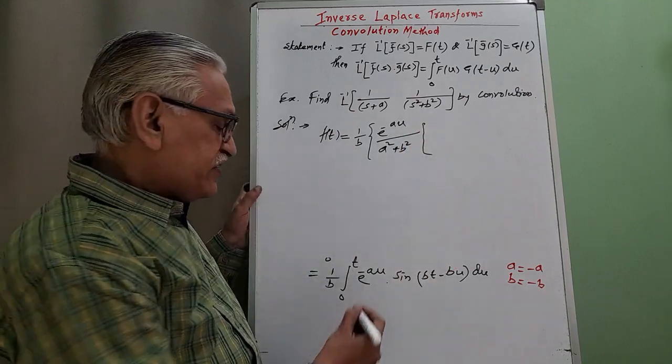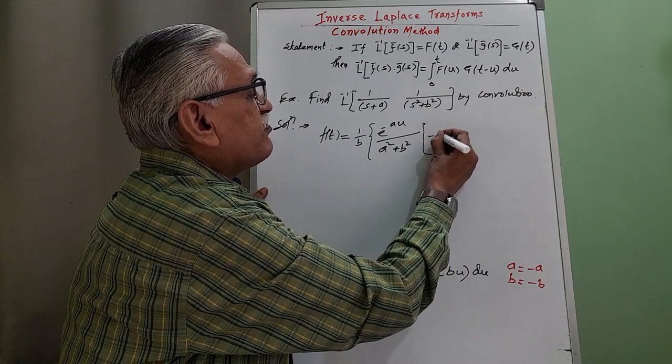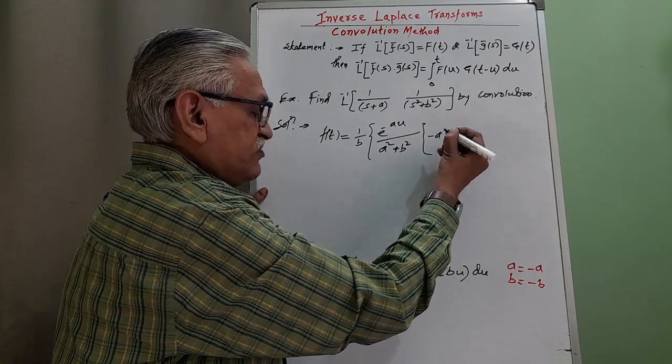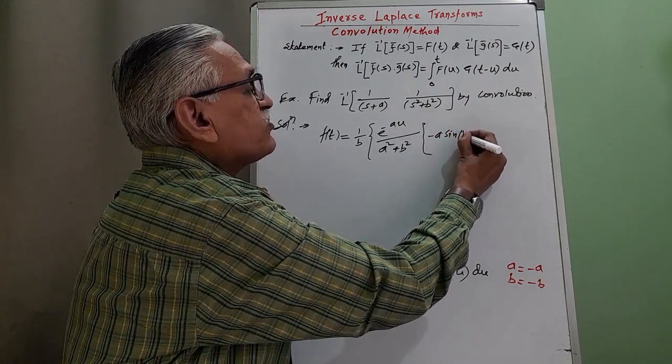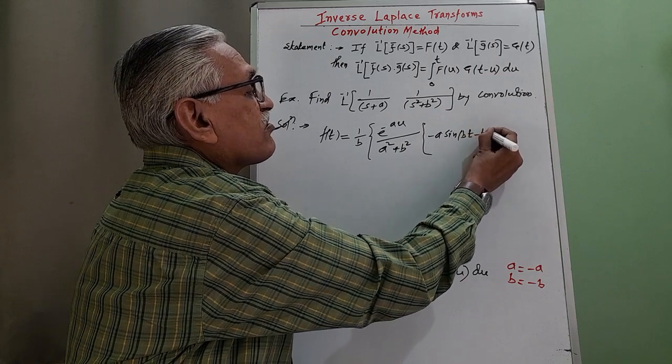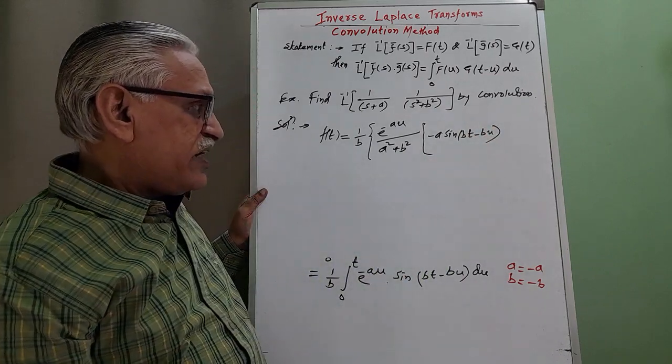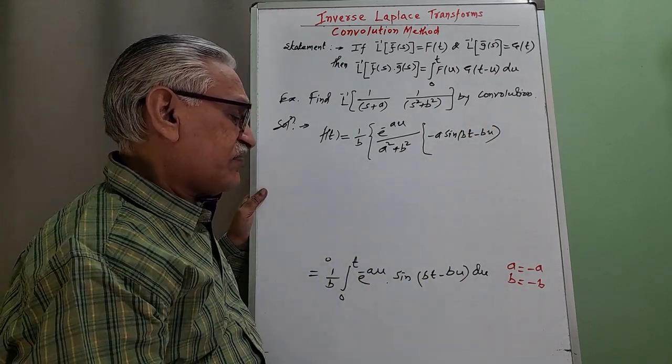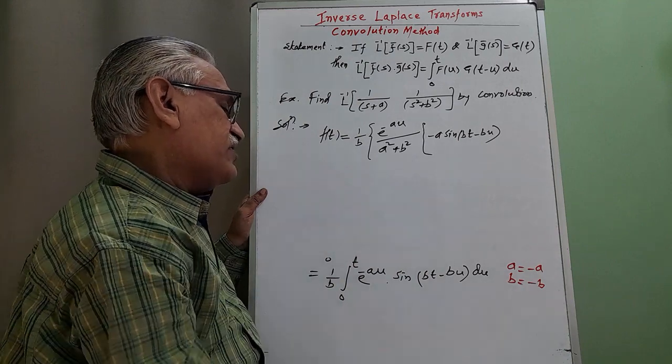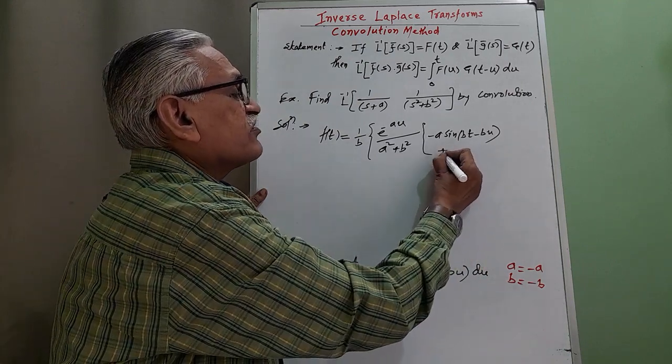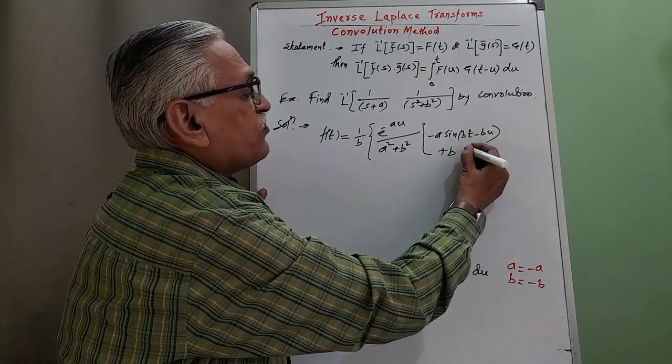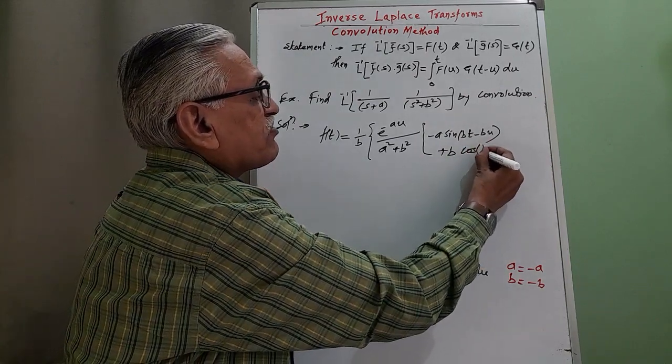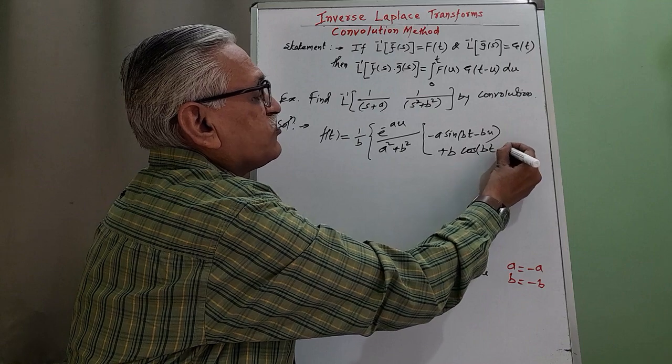Minus a sin of bt minus bu and then minus and this minus it become plus b cos of bt minus bu.